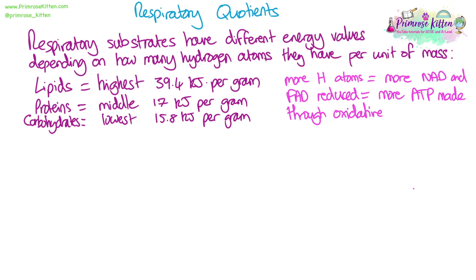The reason is because if they have more hydrogen atoms, then more NAD and FAD molecules can be reduced using these protons, so more ATP can be made through oxidative phosphorylation.